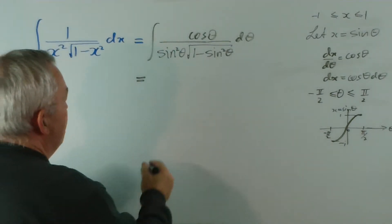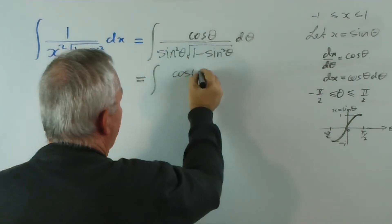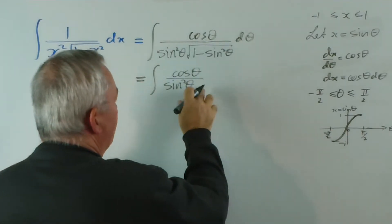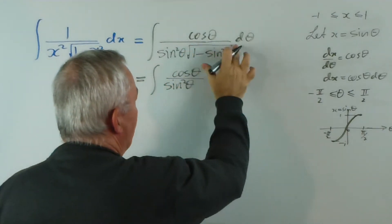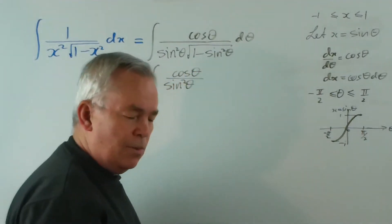Now what have we got? We have the integral of cos θ over sin²θ times the square root of 1 - sin²θ. Now 1 - sin²θ is cos²θ.